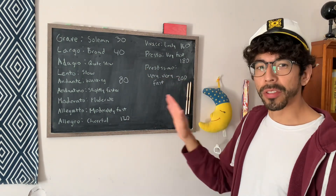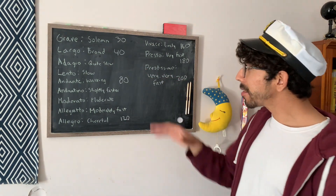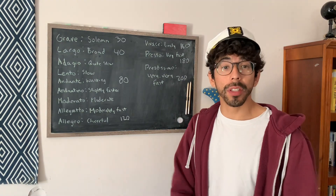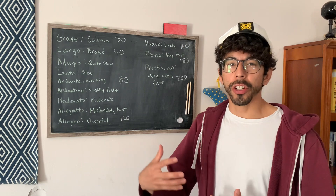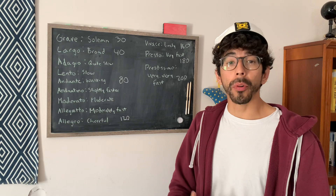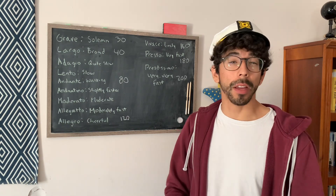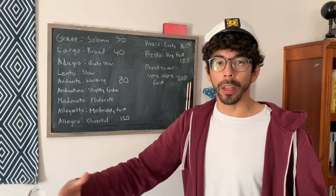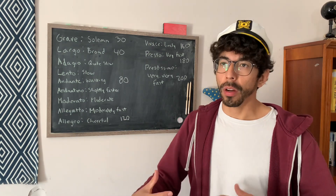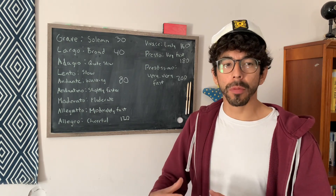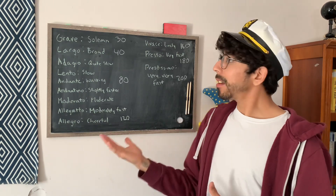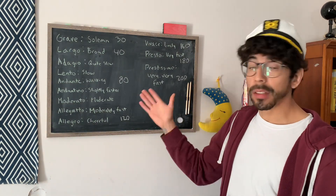Grave is a little extreme on the slow end, but these are the most common tempo markings you'll see. There are also different tempo markings that are more descriptive and give you a feel for the music. One good example would be passionate — it's not really a tempo, but it's more of a feeling. There are others like dreamy, where you want to play the piece in a floaty, airy way. So that's it for tempo markings, at least the basic ones.